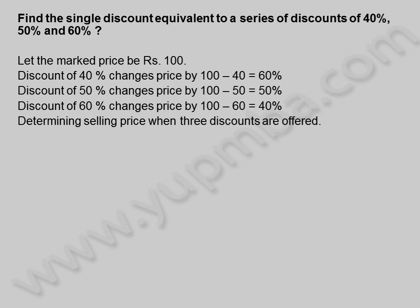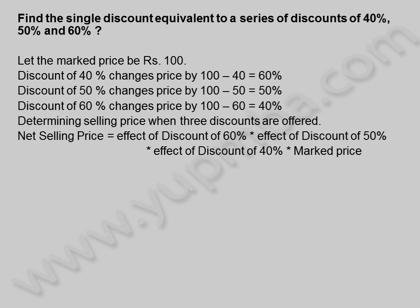Determining selling price when 3 discounts are offered. Net selling price is equal to effect of discount of 60% into effect of discount of 50% into effect of discount of 40% into marked price. Is equal to 60/100 into 50/100 into 40/100 into 100, is equal to 3 into 1 into 4, is equal to 12 rupees.